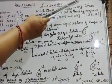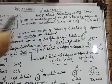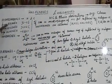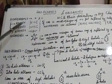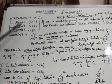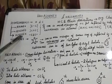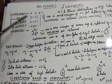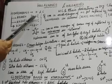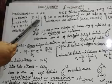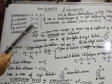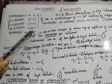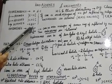Hydrocarbons can be classified into Alkanes, Alkenes, and Alkynes. Alkanes have Carbon-Carbon single bonds, Alkenes have double bonds, and Alkynes have triple bonds.